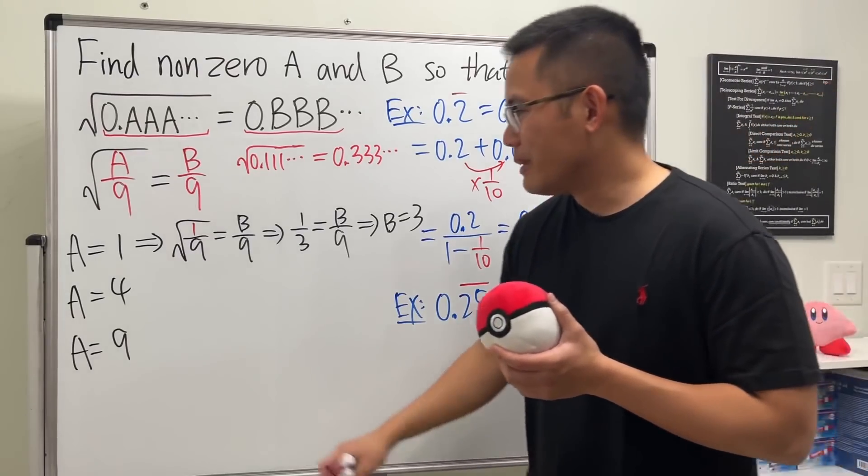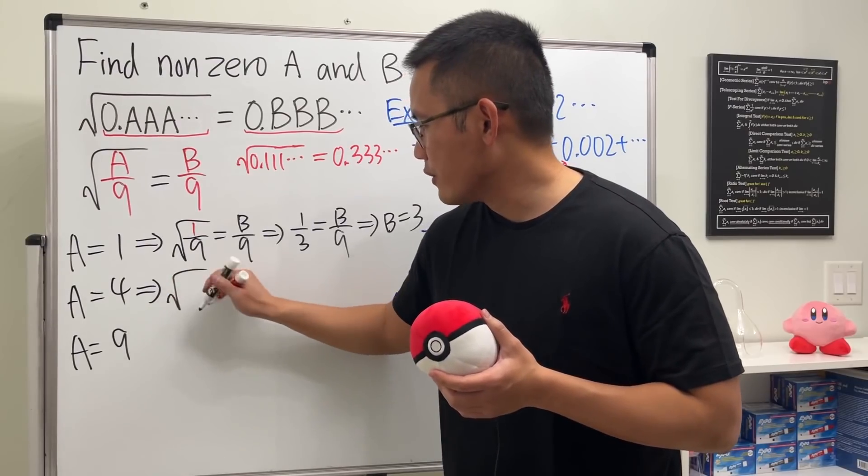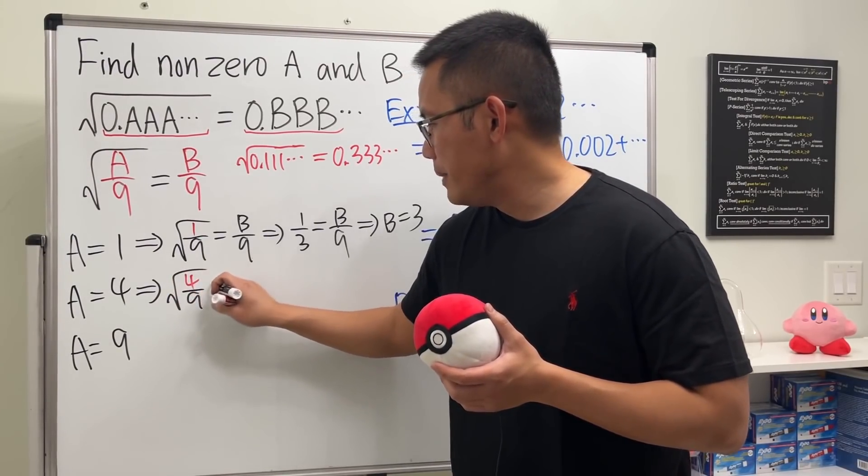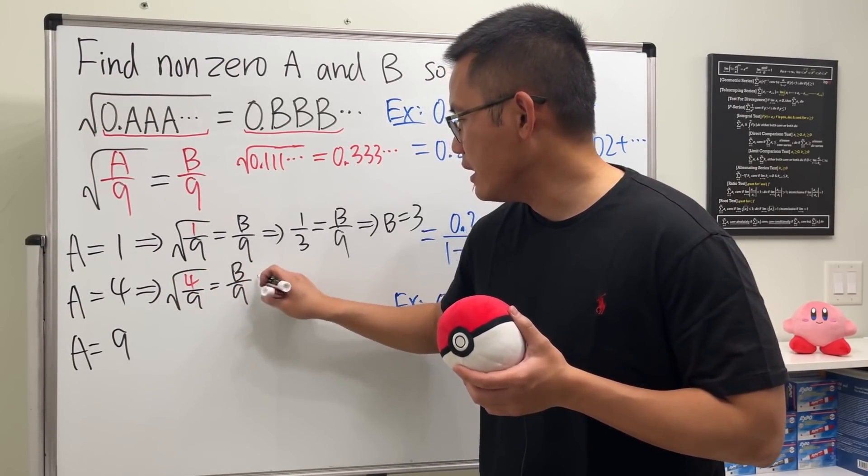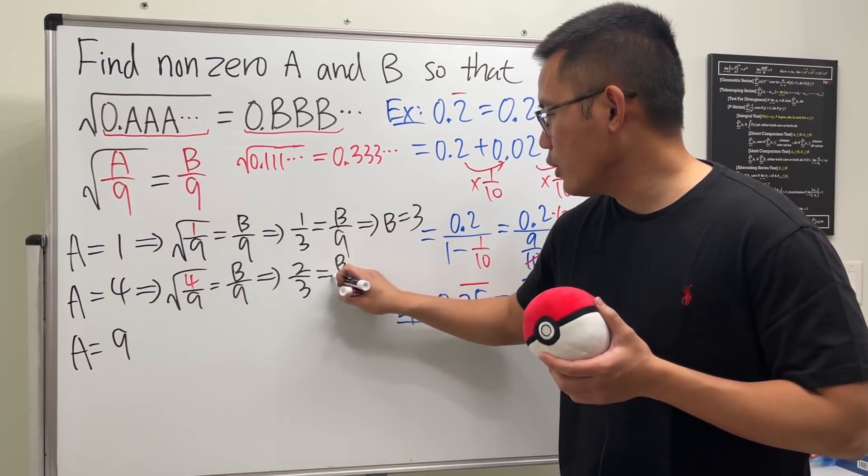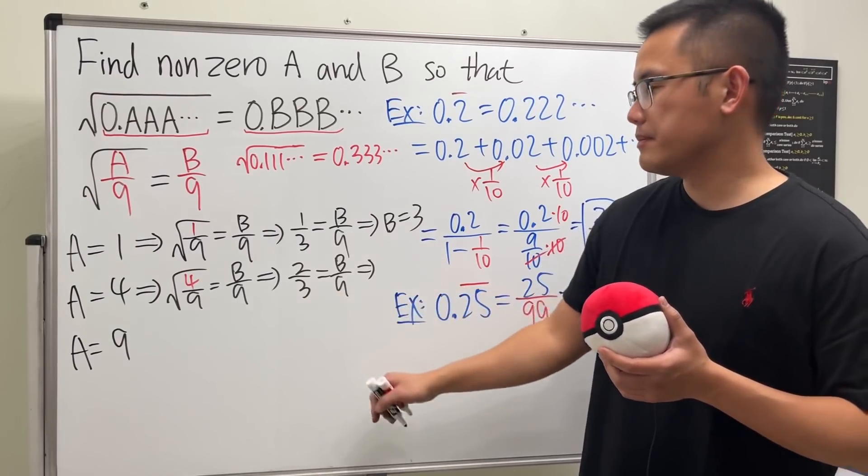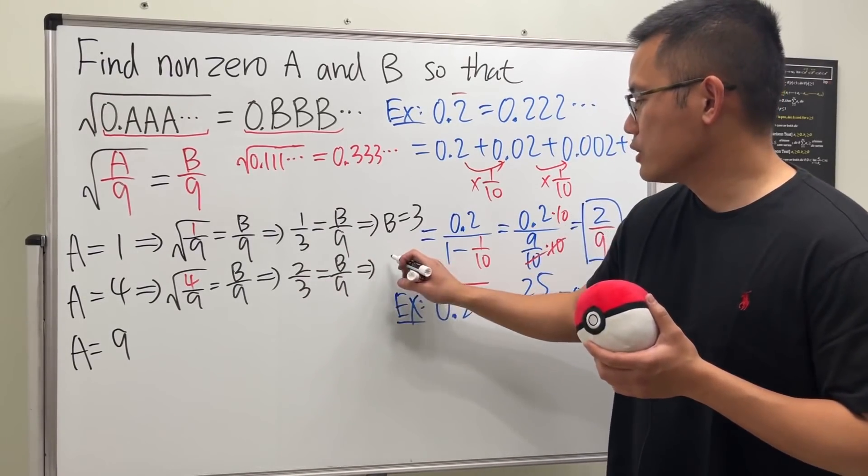Put 4 in there: square root of 4/9 equals B/9. We get 2/3 equals B/9. Multiply 9 on both sides, so B equals 6.